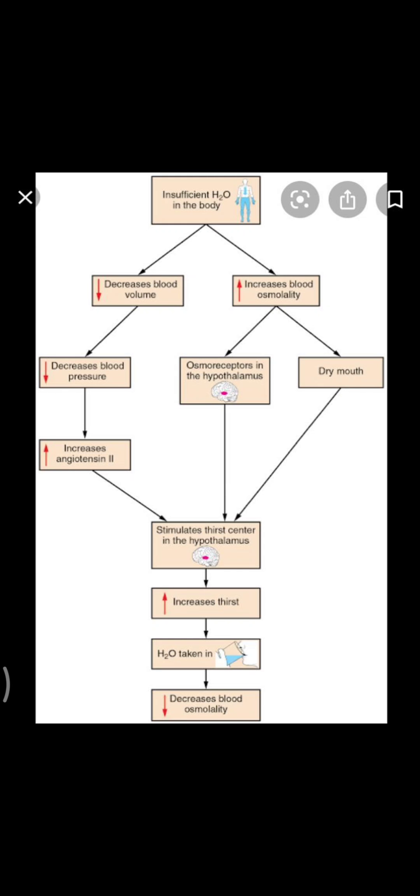There are three systems that work for the regulation of kidney function. First is the hormonal feedback mechanism, in which vasopressin or ADH — the antidiuretic hormone — works. Second is the JGA, that is the juxtaglomerular apparatus, which works for maintaining the GFR. Third is the heart, which releases a factor known as ANF — atrial natriuretic factor.